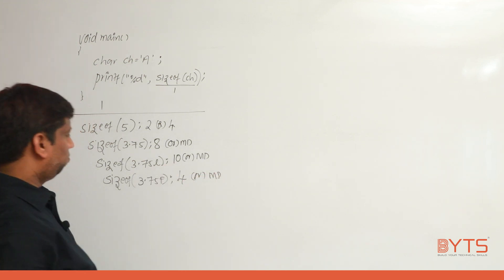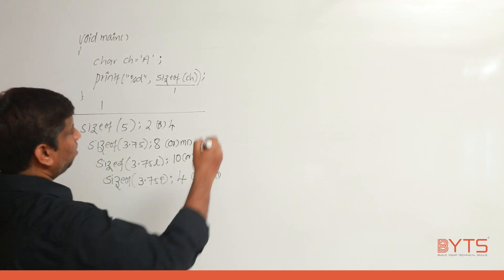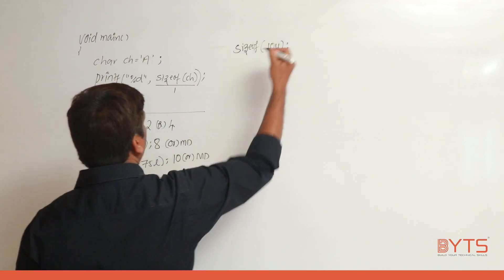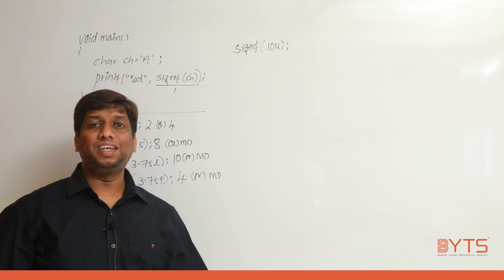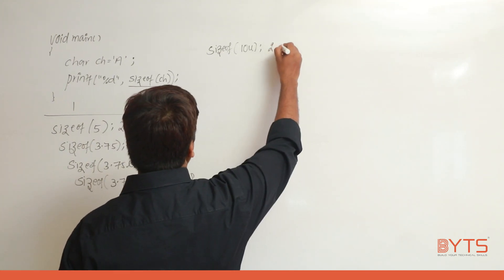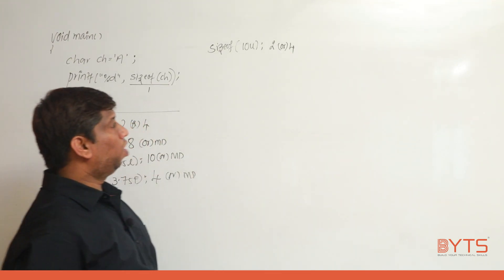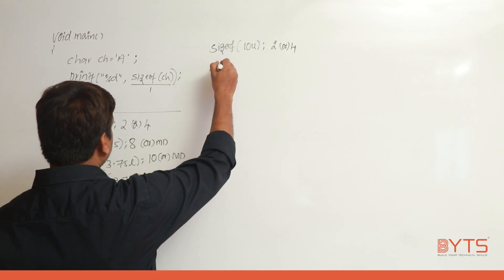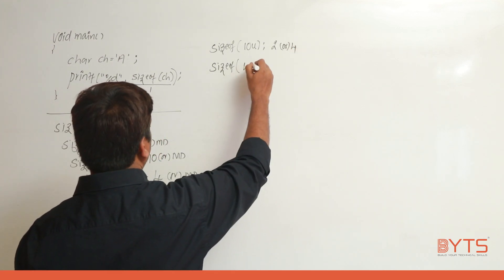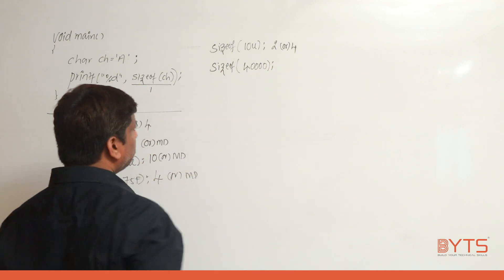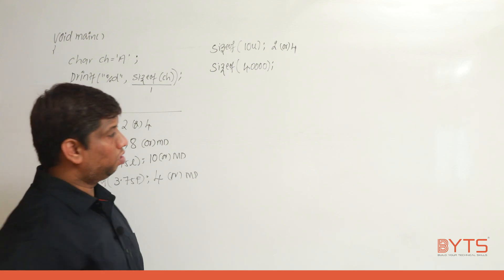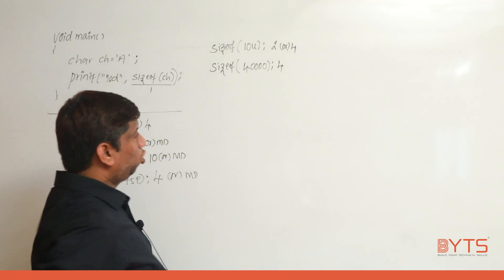sizeof(10u): 10u is unsigned integer, which could be short or long unsigned, so the answer is 2 or 4. sizeof(40000): 40000 is not in the range of short integer, so it is long — the answer is 4, whether or not you append 'l'.